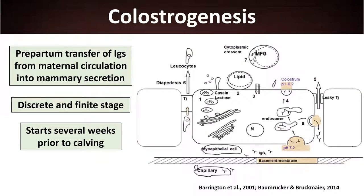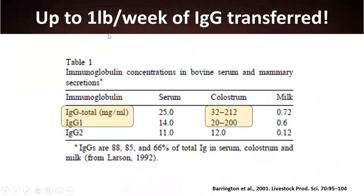Now let's talk about colostrogenesis — the prepartum transfer of IgG immunoglobulins from maternal circulation into the mammary secretion. It is a discrete and finite stage, starting several weeks prior to calving, roughly three weeks before. The focus is on transport of immunoglobulins through the basolateral membrane of mammary secretory cells, through the cell, and release into the alveolar lumen. Up to one pound per week of IgGs is transferred, predominantly IgG1 rather than IgG2.